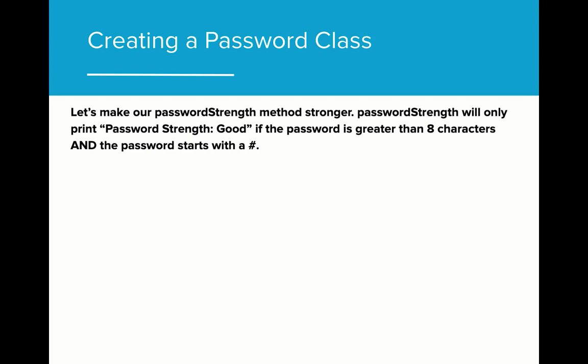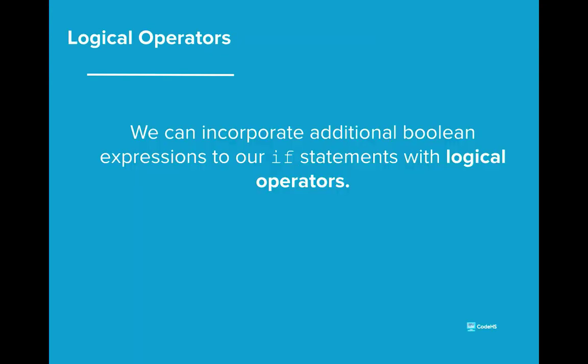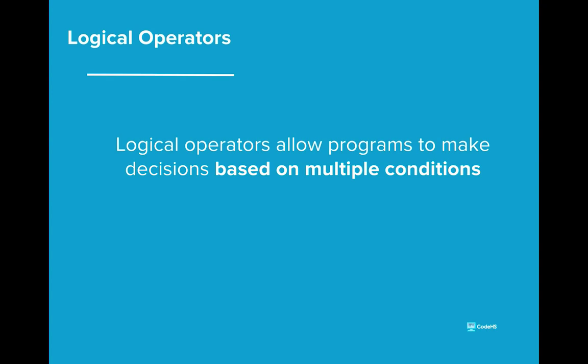But let's say that we wanted to make the password strength even more sophisticated. Suppose we learned that adding a pound sign in front of the password actually makes it more secure, so we want to make sure all users are doing the same. How can we implement this in our program by testing more than one thing at a time to make a decision? We can achieve this by adding another Boolean expression to our if statement using logical operators. Logical operators allow programs to make decisions based on multiple conditions. We would like password strength to print good if the length of the password is greater than 8 AND the password starts with a pound sign, requiring us to connect multiple conditions together in one if statement.